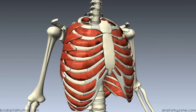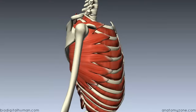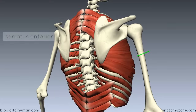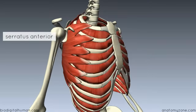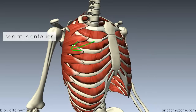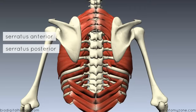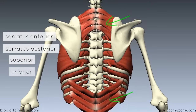Outside the rib cage, we've got three muscles. We've got the serratus anterior, which you can see laterally and anteriorly here. And then at the back, we've got the serratus posterior — a superior and an inferior muscle.